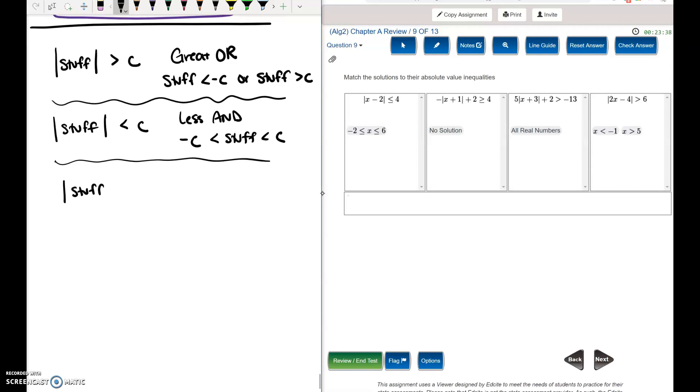Absolute value of stuff equals a negative. Can a positive number equal a negative number? So that is no solutions. Absolute value of stuff is greater than a negative. Is a positive number greater than a negative number? So that is all real numbers. Or many solutions or whatever. Absolute value of stuff is less than a negative. Can a positive be smaller than a negative? No, so that is no solutions.